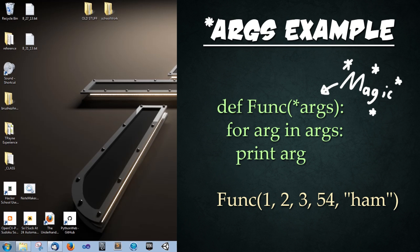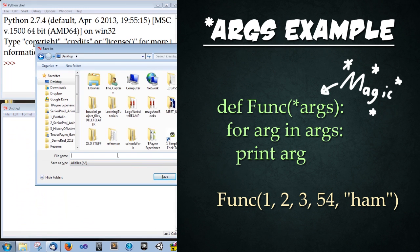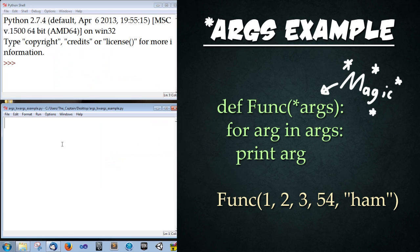So let's go ahead and fire up IDLE. Let's save this to the desktop and we're going to call this args_kwargs_example.py. Alright, so let's create a simple function. First we're going to type def Func(*args): and then end the parentheses and colon.